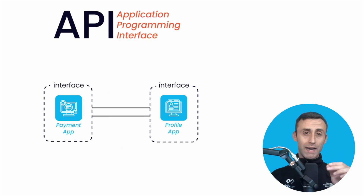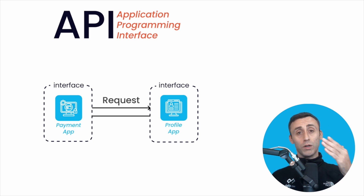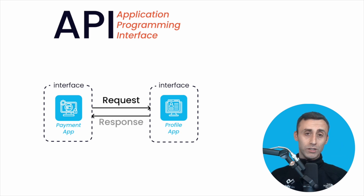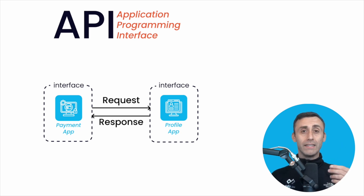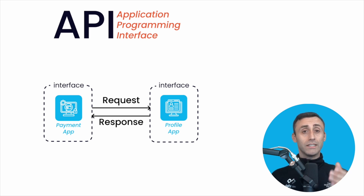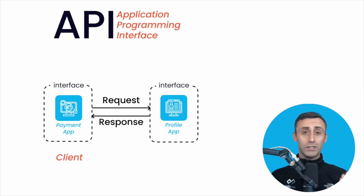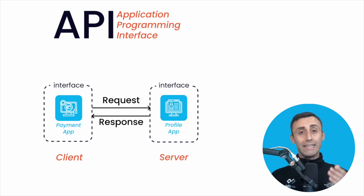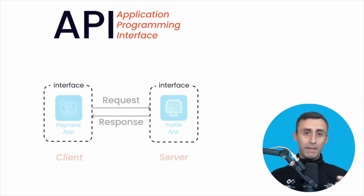Interface refers to a contract of services between any two applications. The contract defines how the two services will communicate using request and response. API architecture is usually explained in terms of client and server. The application sending the request is called a client, and the application responding to the request is called a server. And what enables all this activity is an API.